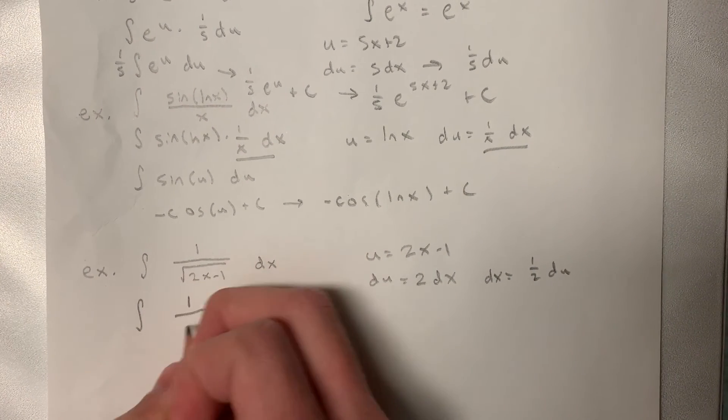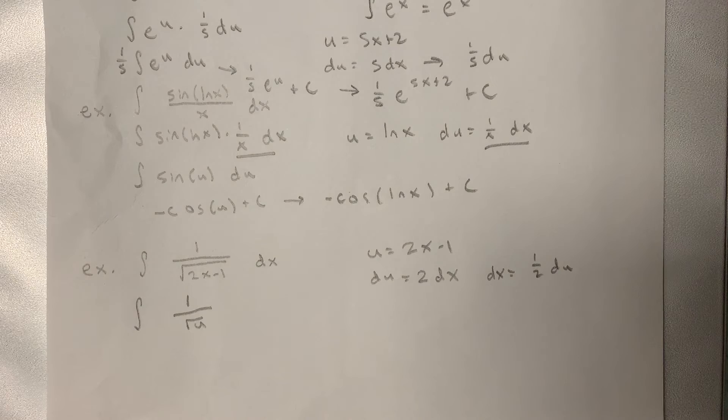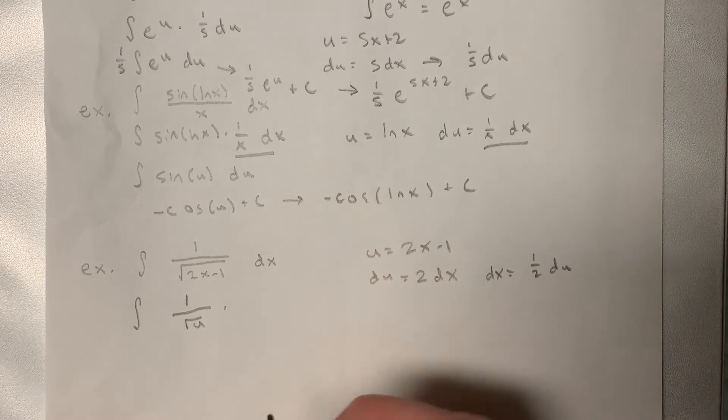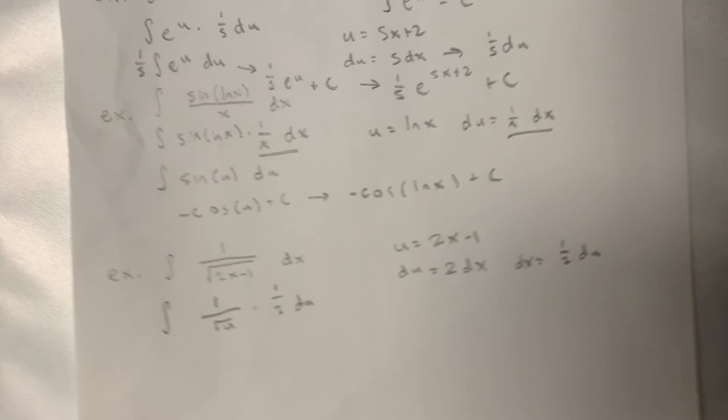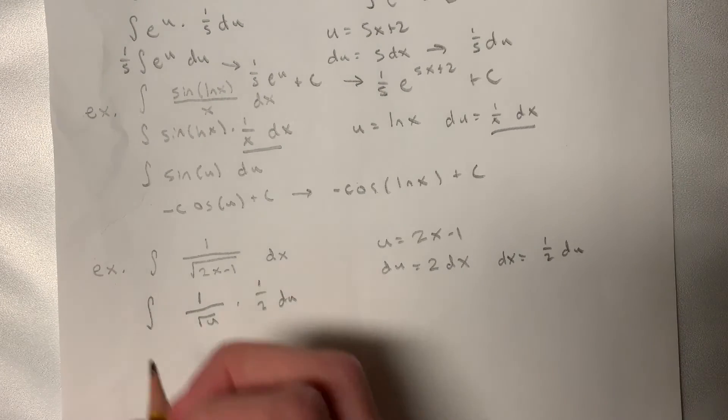Okay, so bringing this down, we have the integral of 1 divided by the square root of u times 1 half du. Okay, let's pull out our 1 half.